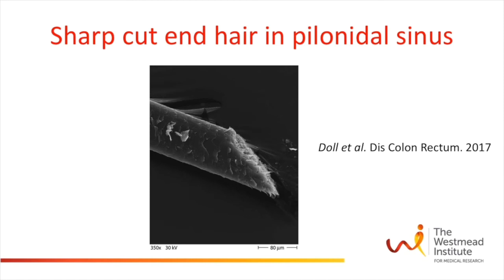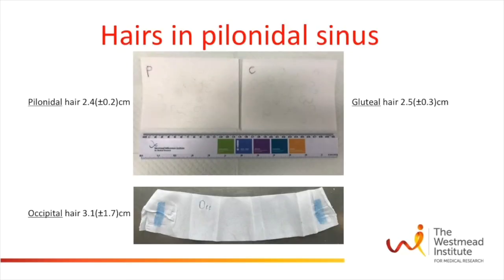However, we noticed that the scales on the hair used in this illustration were facing the wrong direction according to our findings, as mentioned before. These authors also found that the physical properties of the hairs in the pilonidal sinus were identical to occipital hair, and therefore suggested that pilonidal sinus disease is promoted by occipital hair. However, in our experience, short hairs are the most common within the sinus, and the sizes of hair after a barber cut are much more variable.